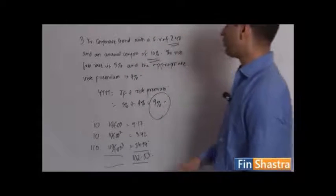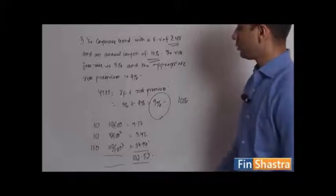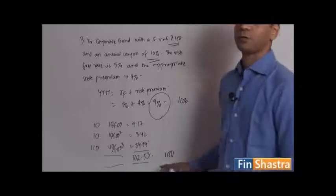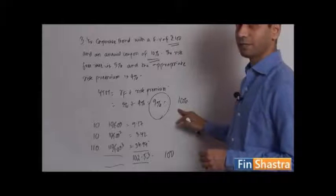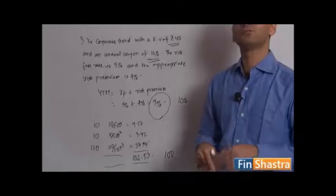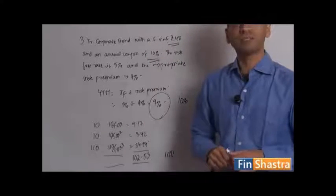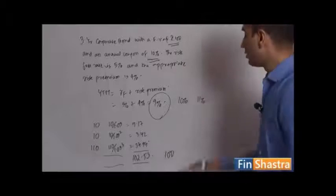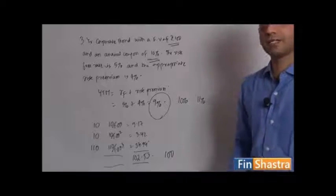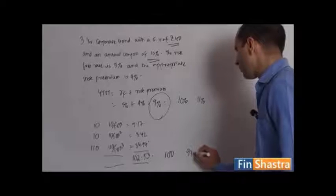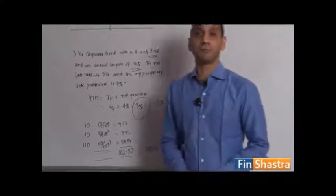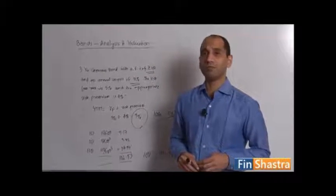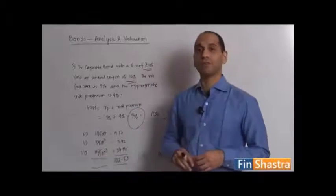It's worth working out the same problem with a YTM of 10 percent — you will see the value of the bond comes to rupees 100. When the discount rate equals the coupon rate, the bond is priced exactly at face value. And if the investor is seeking a return of 11 percent while the bond gives a 10 percent coupon, don't be surprised if you get a price lower than 100 — somewhere around 97 to 98 — because the bond investor would only be willing to pay below face value.